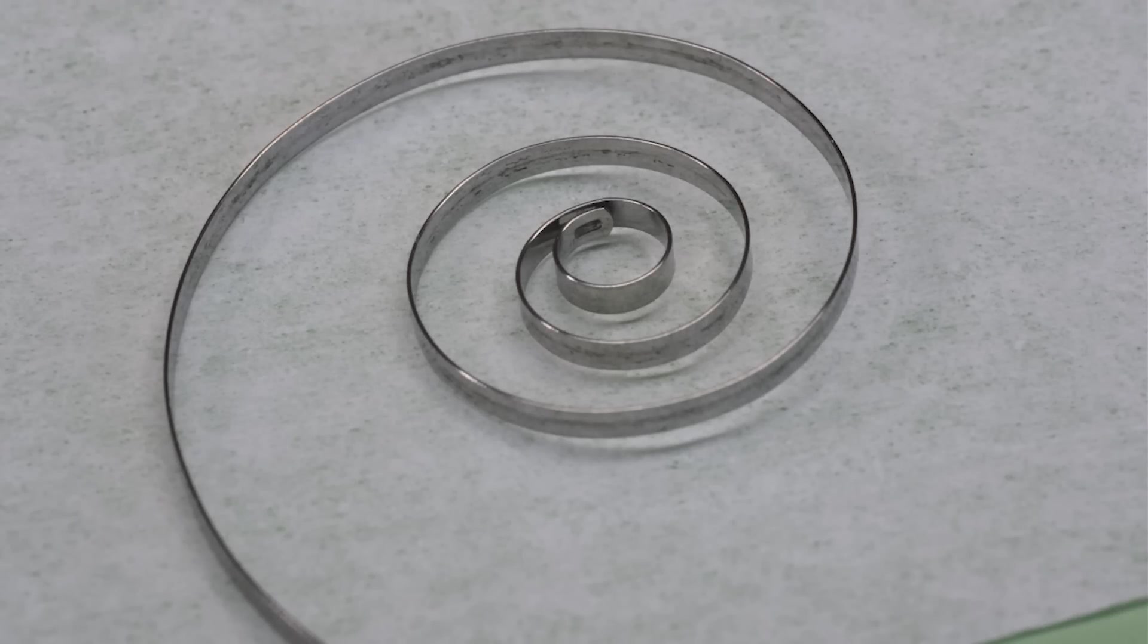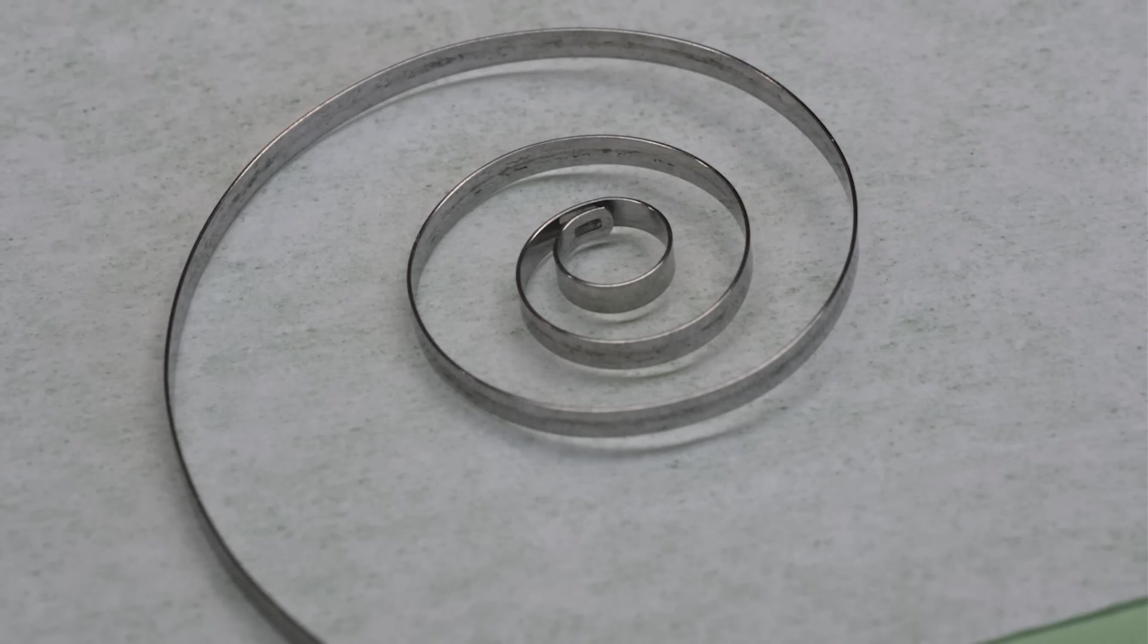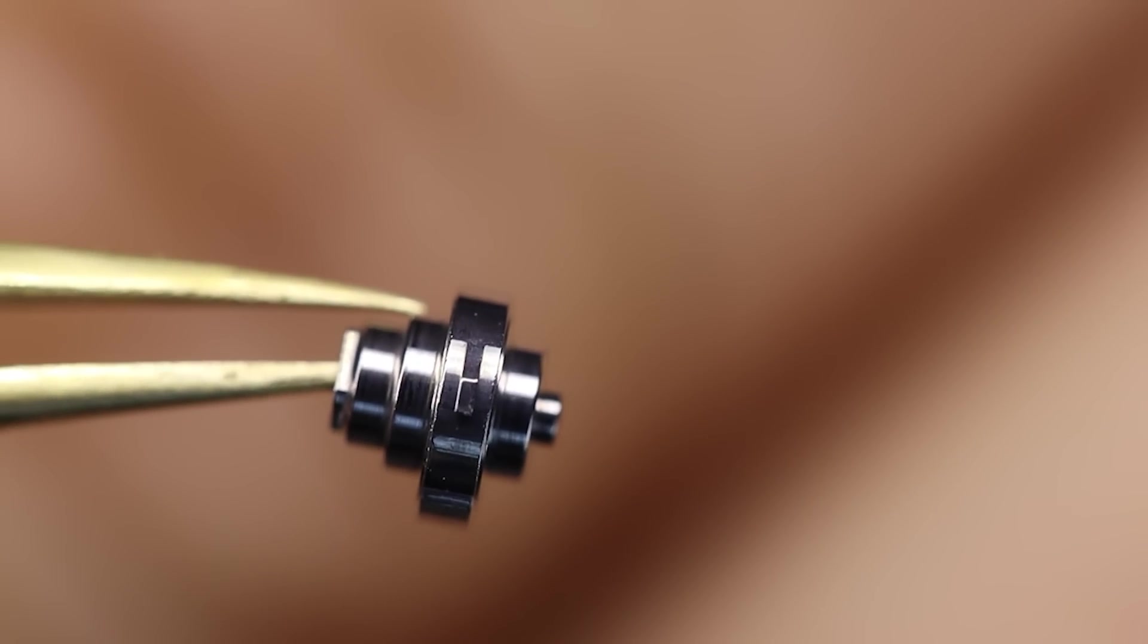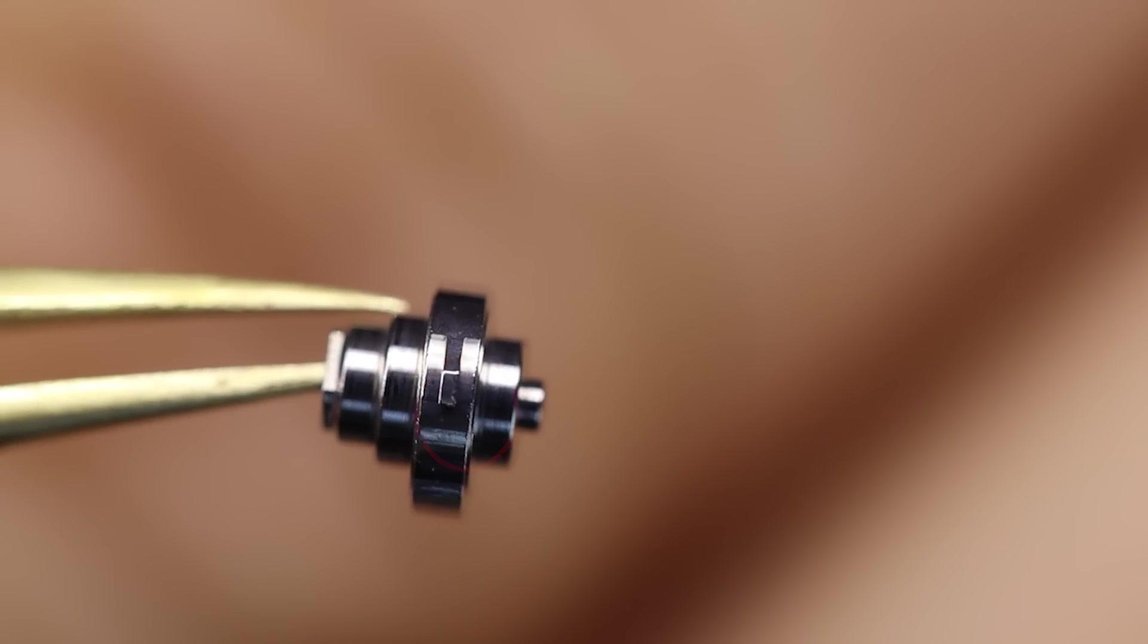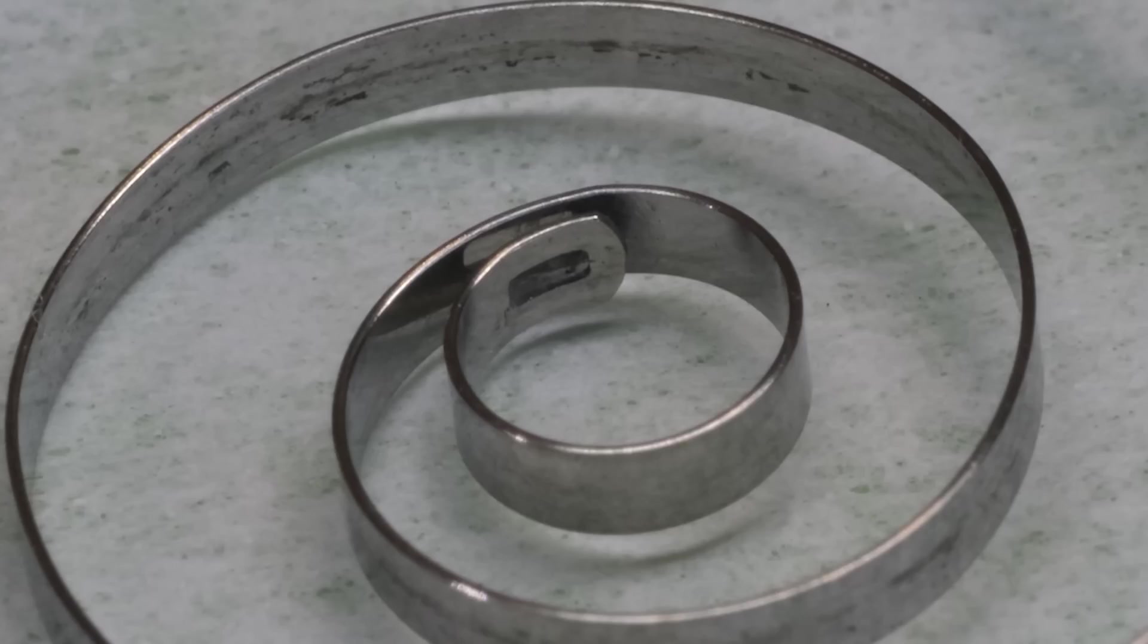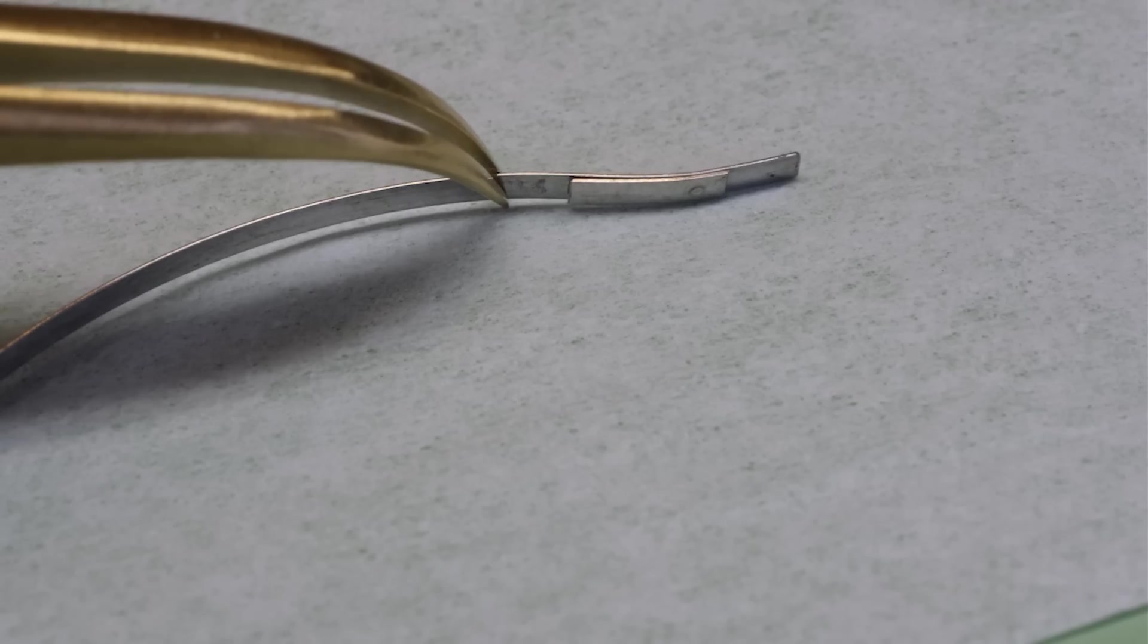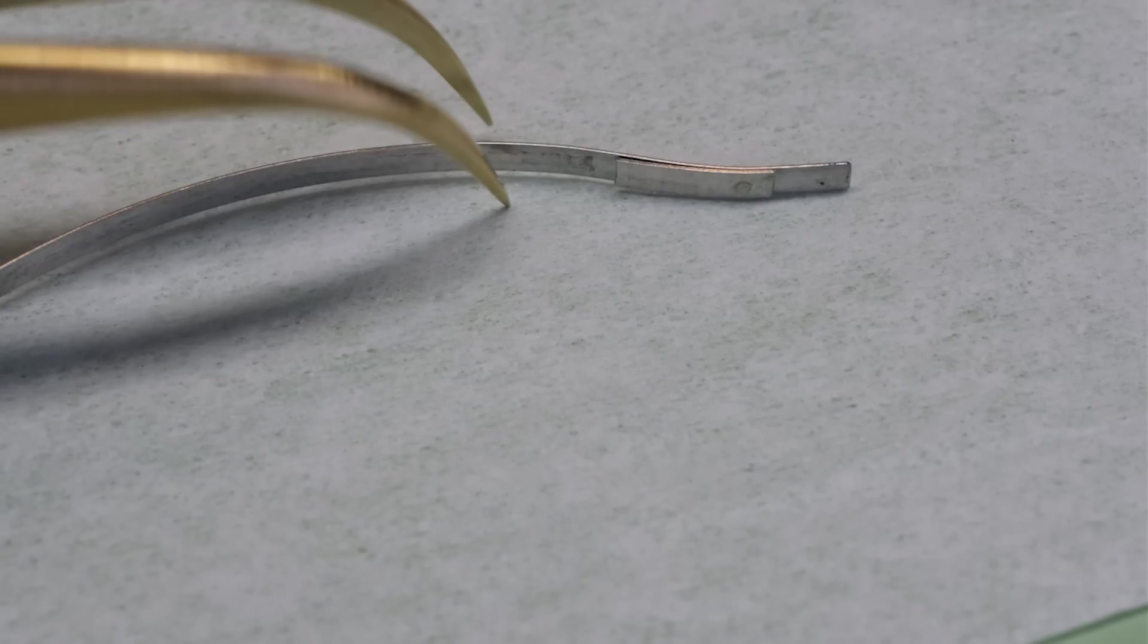So let's start with the energy source. We said we need to get this mainspring into the barrel, but we also need to be able to wind the mainspring once it's inside the barrel. The thing we use to wind the mainspring is called the barrel arbor, and on the barrel arbor there's this little hook which fits into the eye on the inner loop of the mainspring. Normally I would say be very careful with hooks around the eyes, but for this one, go for it.